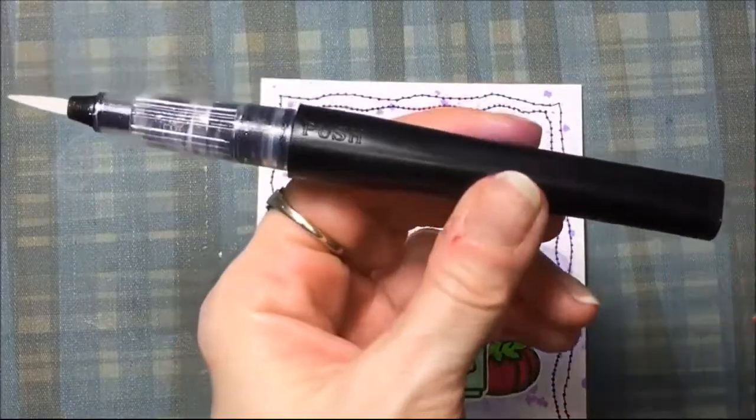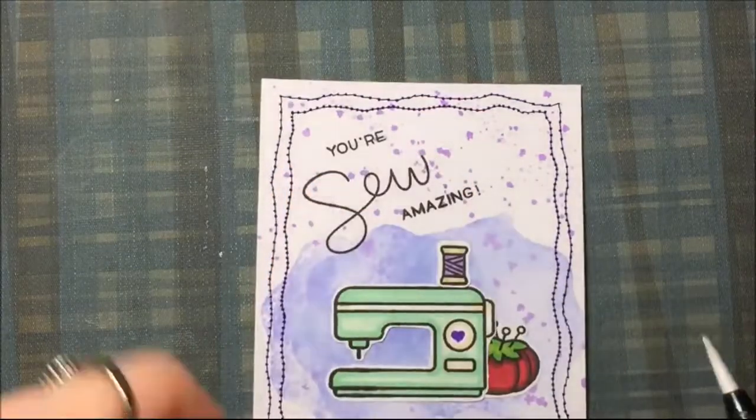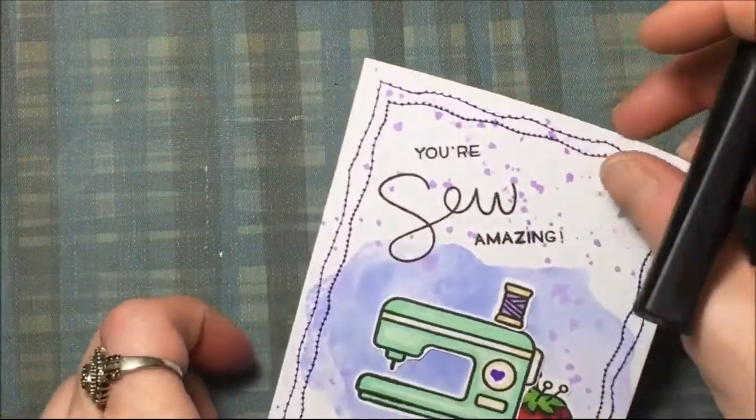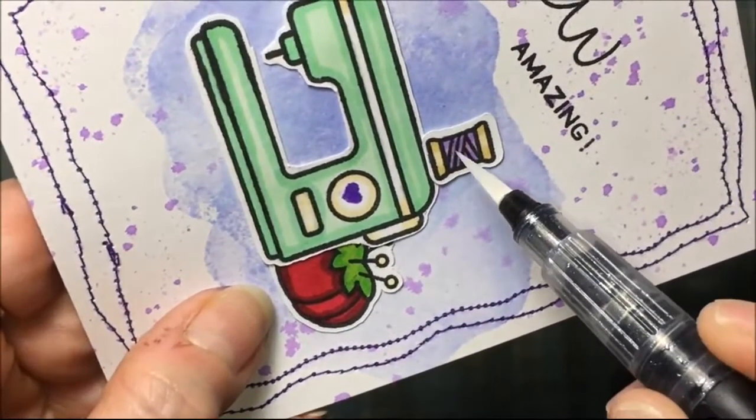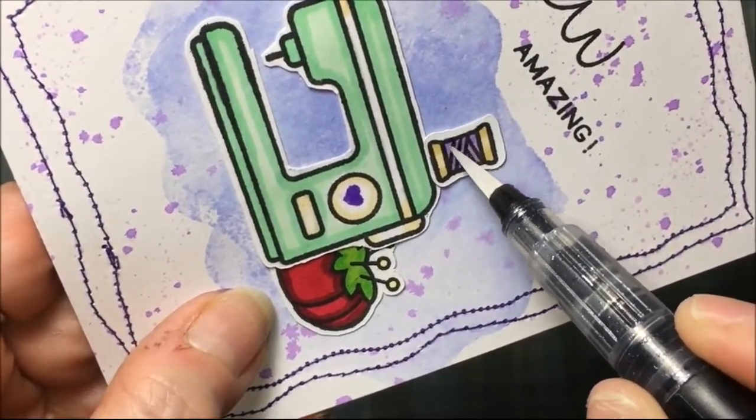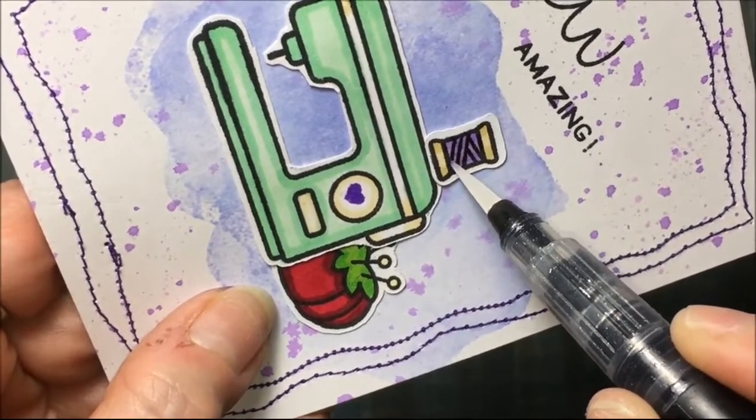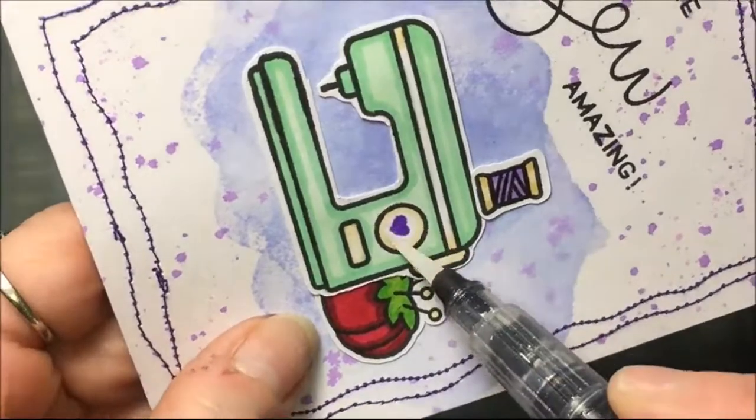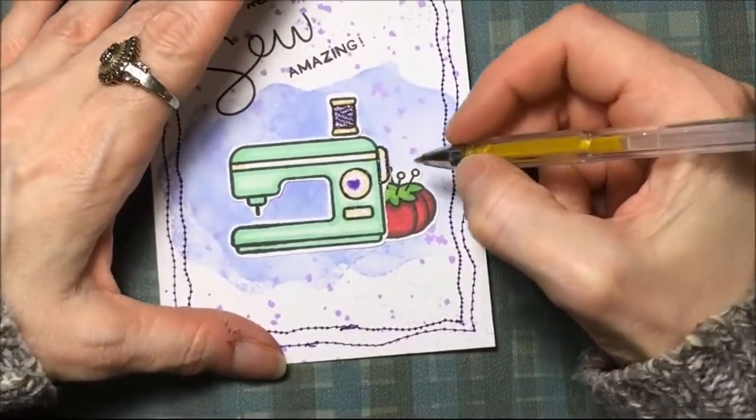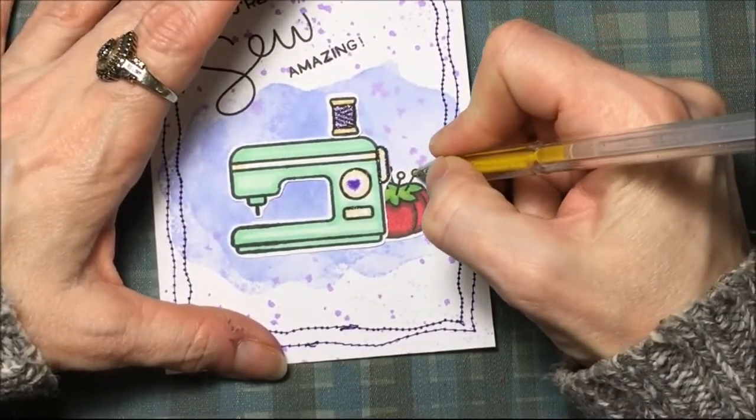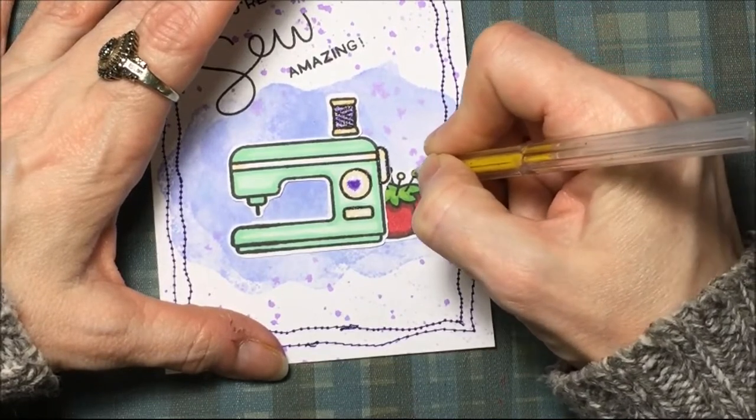Then I'm using a Spectrum Noir Sparkle Pen, the Clear Sparkle Pen. I'm just going to put that on the dials of the sewing machine and on the thread of the sewing machine. For the tips of the pins, I'm just using some yellow glitter gel pen.